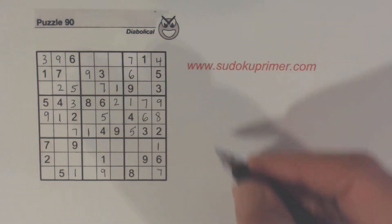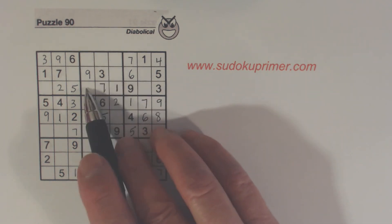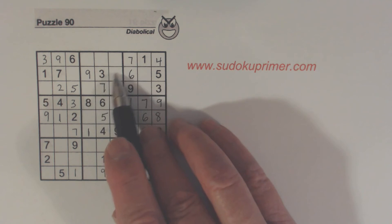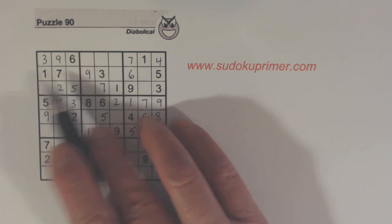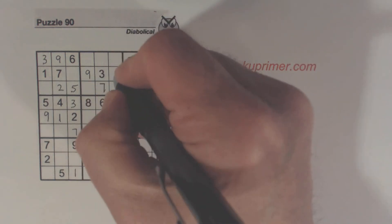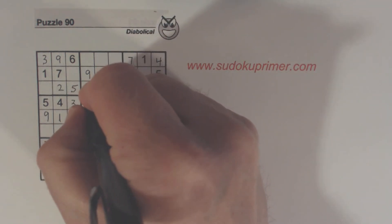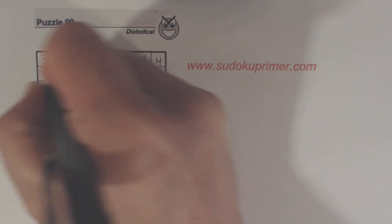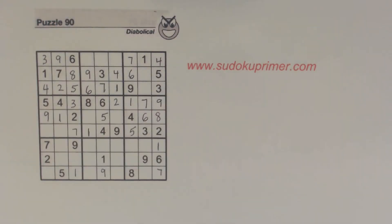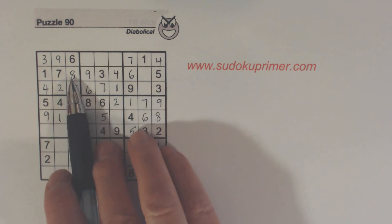And that makes that a 6 right there. Now we had, if you remember, we had 1, 4, 6 triplets here. We filled in the 1, so we have 4, 6 left here, 4, 8 here. We can solve them now, because of this 6 here. We can solve both the 4, 6 twins and the 4, 8 twins.